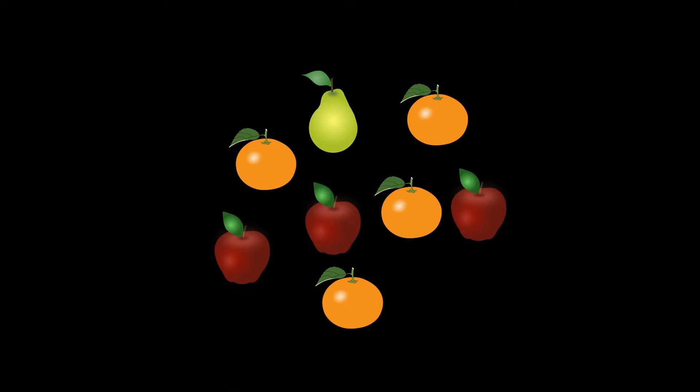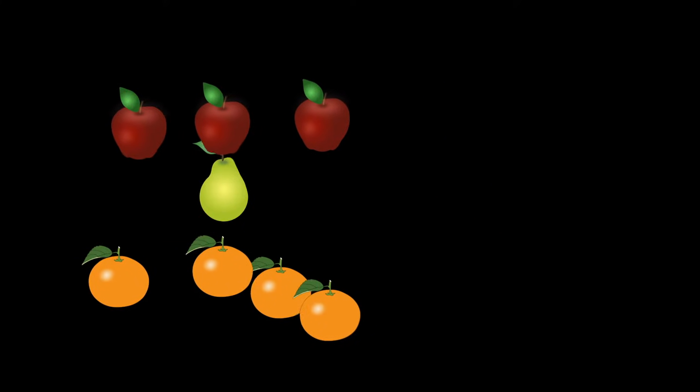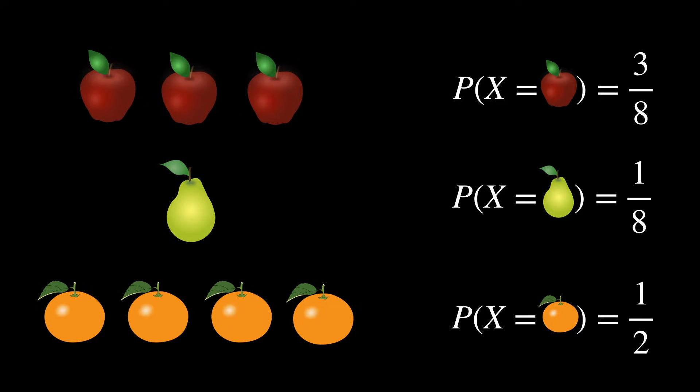If we have three apples, one pear, and four oranges, the probabilities of picking each type of fruit are 3 eighths, 1 eighth, and 1 half, respectively.